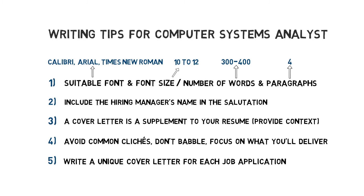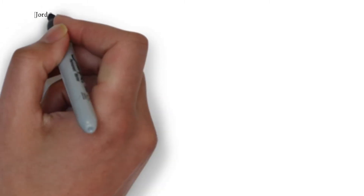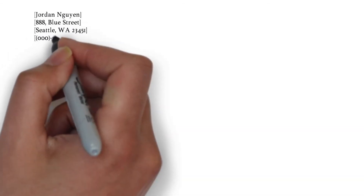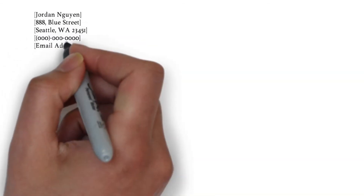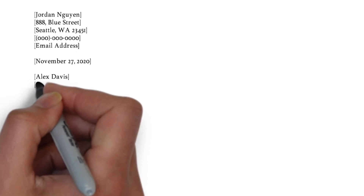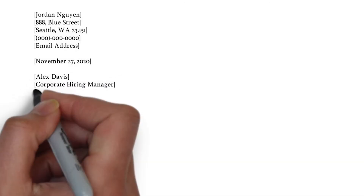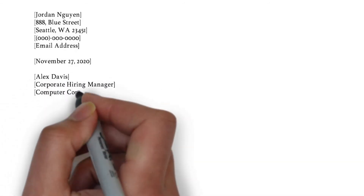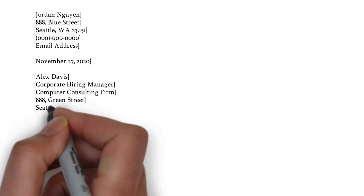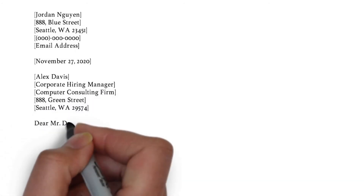That's it for the most important writing tips for computer systems analysts. Now I want to start writing the cover letter example. You need to list your contact information on the left side. In between white lines underneath, we put the date and then the corporate hiring manager's name and job title, followed by the computer consulting firm's information. As for the salutation, we write Dear Mr. Davis.